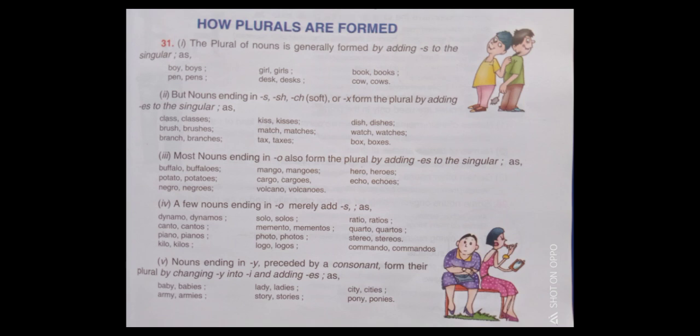Most nouns ending in O also form the plural by adding ES to the singular, as: buffalo, buffaloes; mango, mangoes; hero, heroes; potato, potatoes; cargo, cargoes; echo, echoes; negro, negroes; volcano, volcanoes.